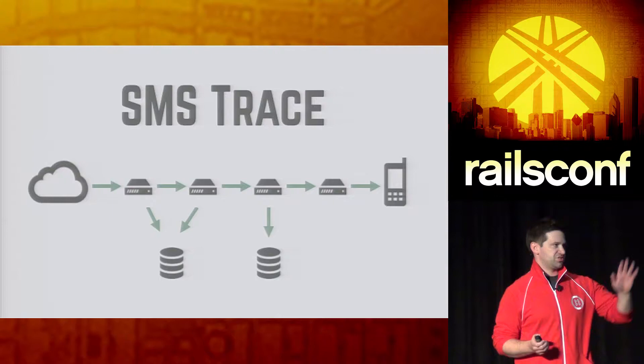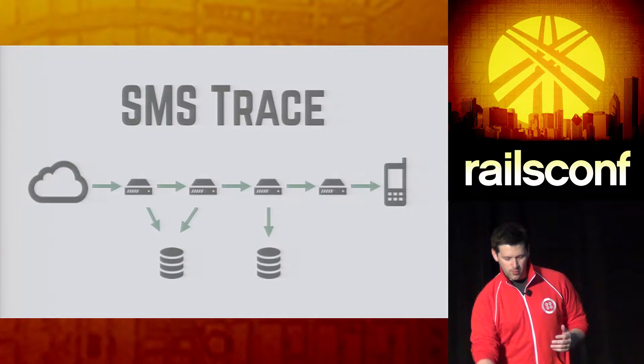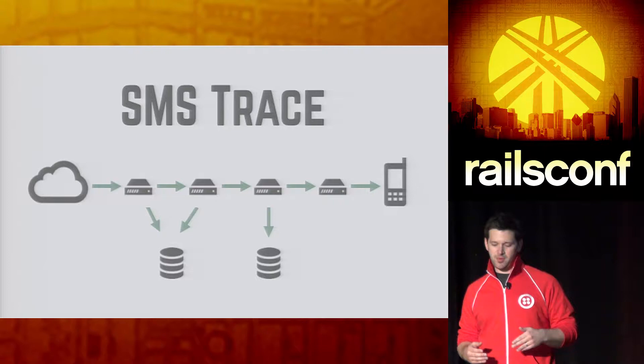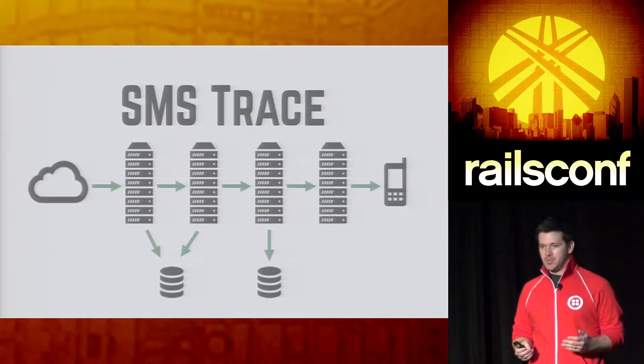At any given time, there are nine different distributed components all communicating when a message comes into the service via the API until it's handed off out to the carriers. We ran into some problems. This is a very basic overview — it comes in, it's handed off to another server, then another, then another, with some DB persistence communication going on. But a distributed tracing system for this is kind of bland when you're just handing requests off from system to system. Profiling is useful in that it gives you more information about latencies and other issues occurring between your services.